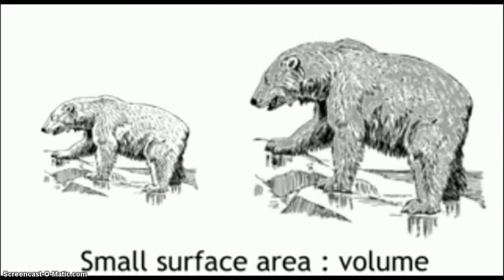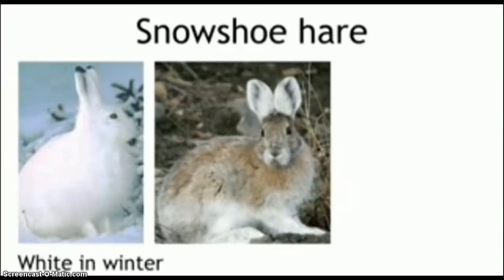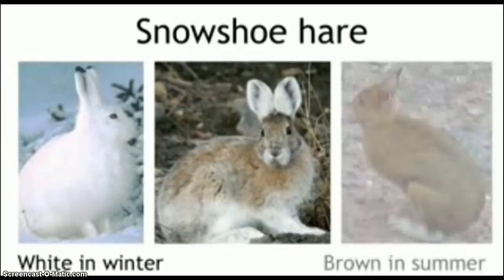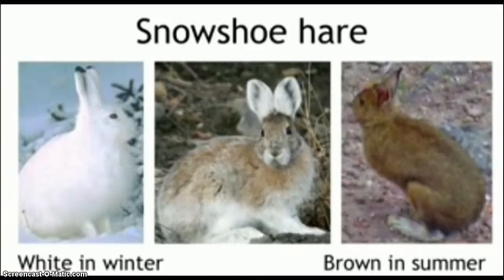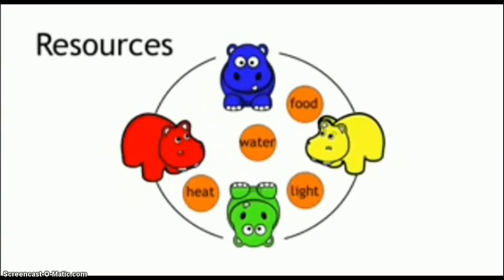Another interesting example of an adaptation is the fur of the snowshoe hare, whose fur changes color. It is white in the winter to hide in snow, and brown in the summer to camouflage in grass. All you have to remember when thinking of how organisms adapt is what the organism is competing for, and what would help them to survive in their environment.